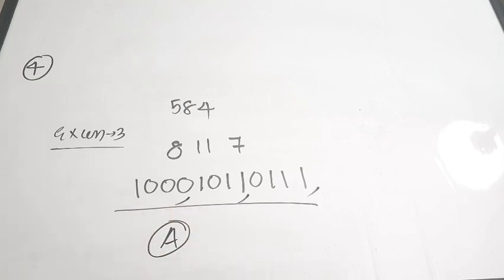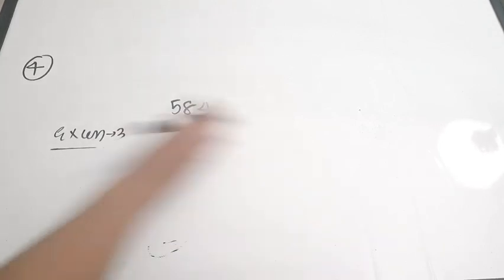The XS3 code for 584 is option A. The quick revision video of number systems also covers XS3 code — the link will be in the comments and description. Next is the fifth question.